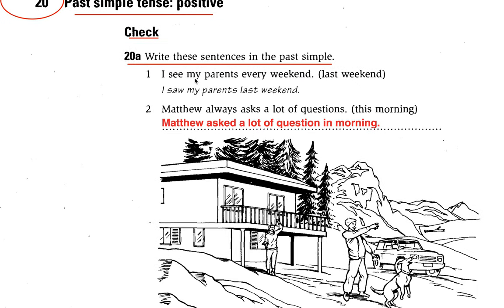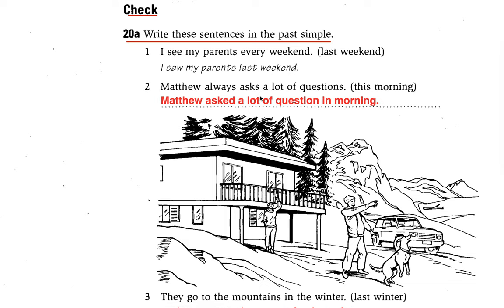Number one: I see my parents every weekend. The word I gave you is 'last week,' so how can I change the word from present to past simple? Let's see this one. I came — I saw my parents last week. So I can change from present to past simple. The answer is: I saw my parents last weekend.